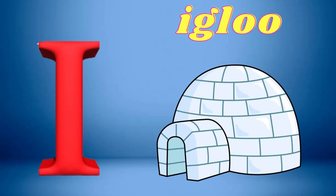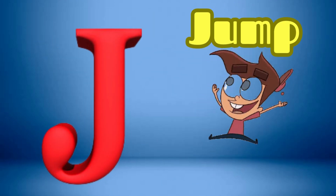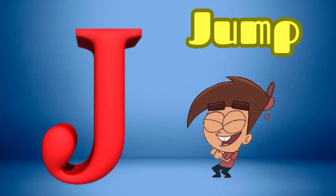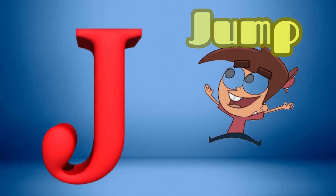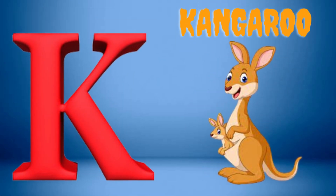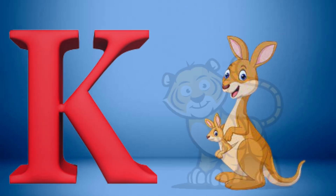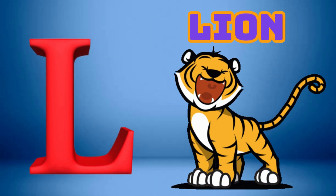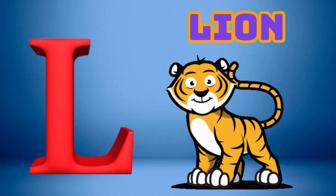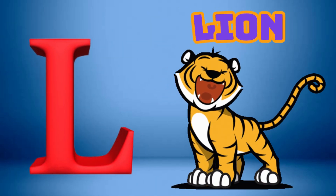I is for Igloo, I-I-Igloo. J is for Jump, J-J-Jump. K is for Kangaroo, K-K-Kangaroo. L is for Lion, L-L-Lion.